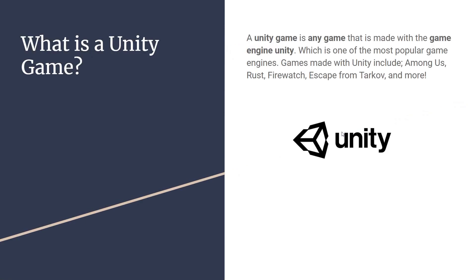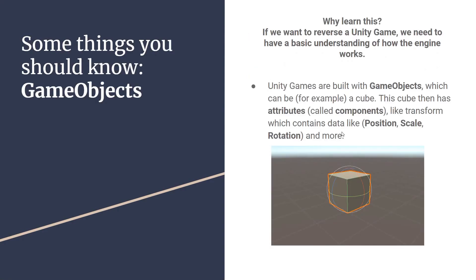So what is a Unity game? A Unity game is any game made with Unity Engine. Some of the most popular games include Among Us, Rust, Firewatch, Escape from Tarkov, and more. We're going to go over the basics of Unity Engine, because if we want to reverse a Unity game, it's essential that we have a basic understanding of how that engine works.